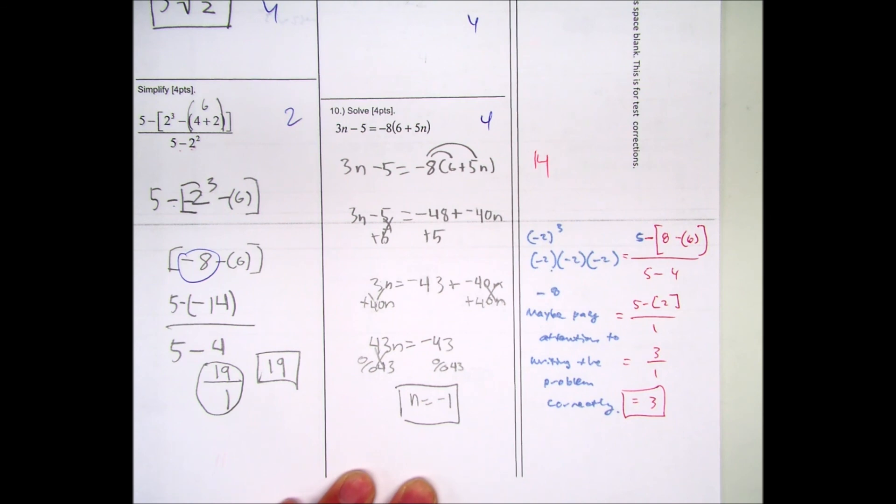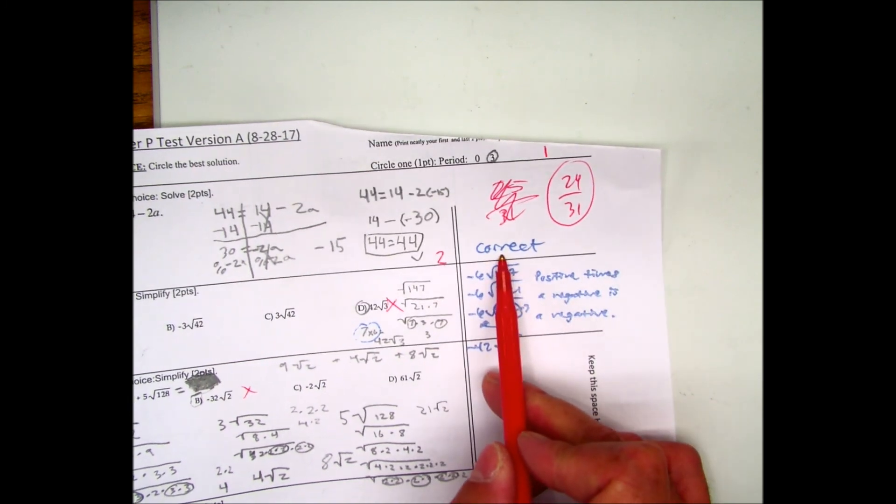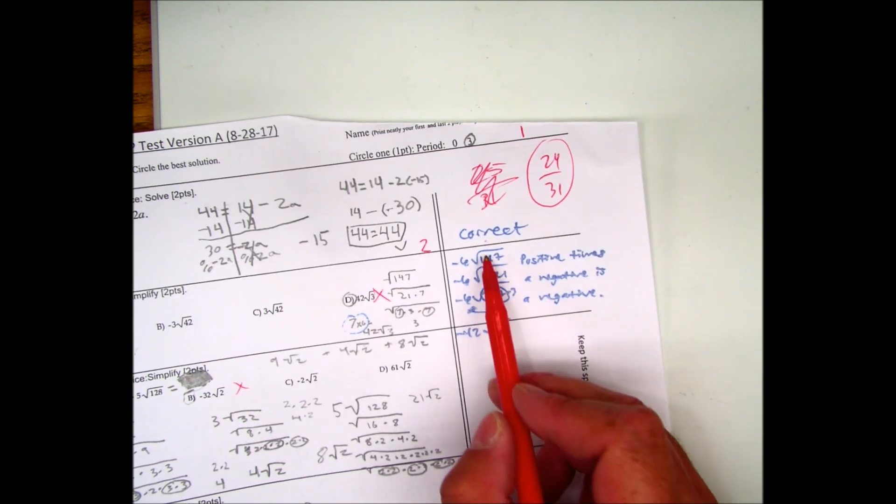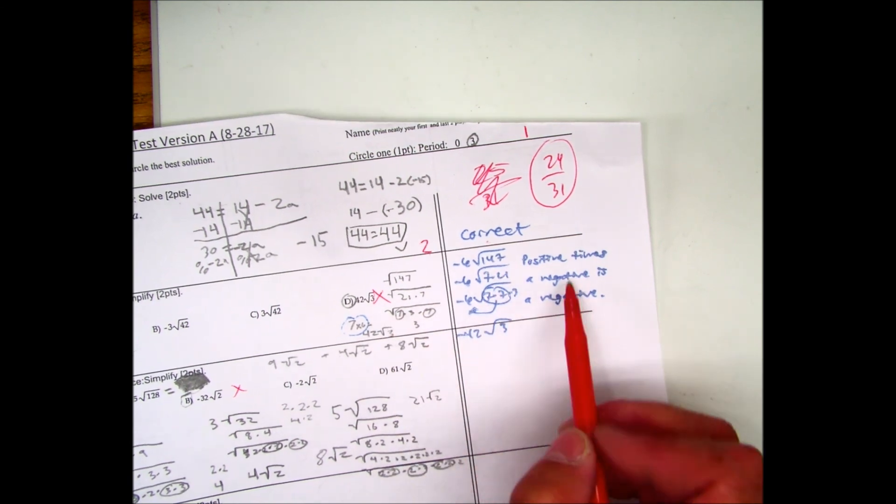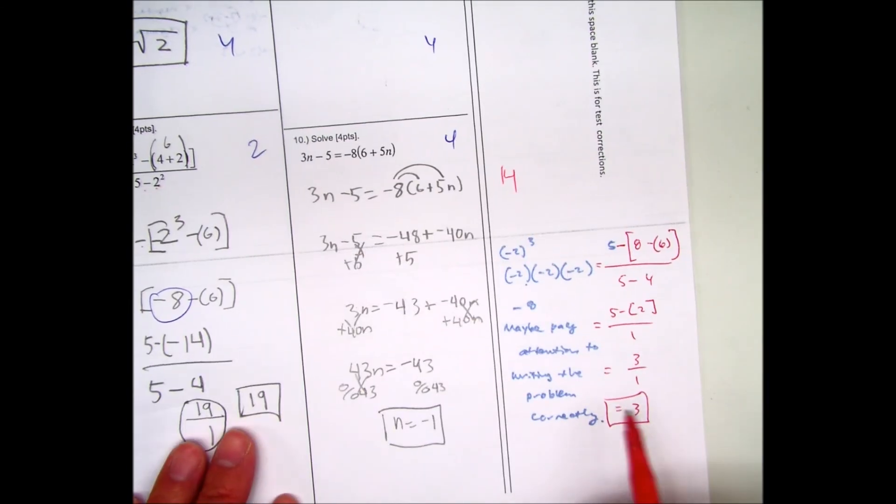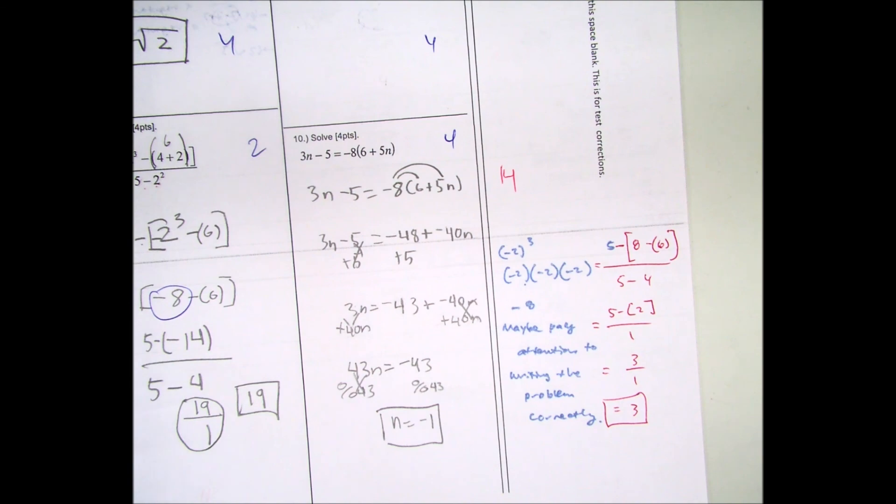So in summary, your quiz and test corrections, you are either writing the word correct. You're also redoing, if you got it wrong, you're redoing the whole problem. If you missed any of the points and you're writing a sentence explaining what you did wrong. Hope this was helpful.